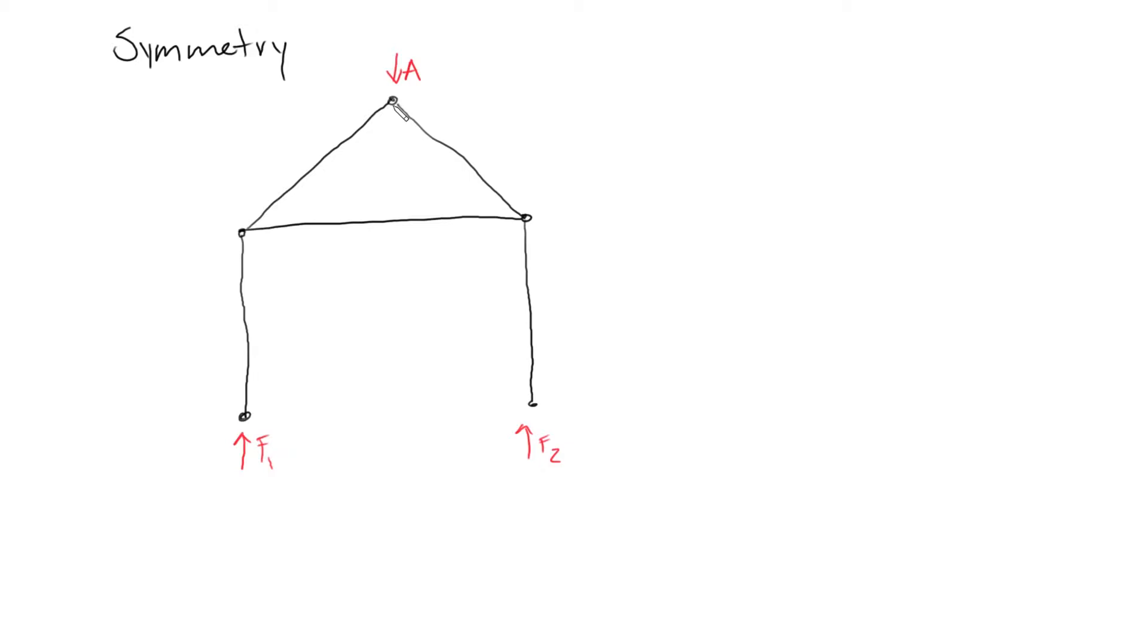This one's kind of obvious—the line of symmetry or axis of symmetry lies directly right here. You can imagine folding a piece of paper along this line.